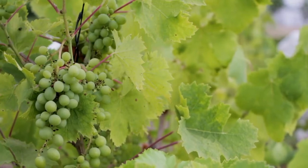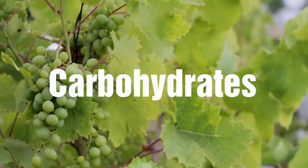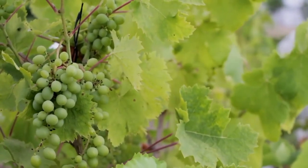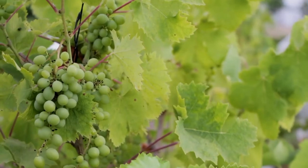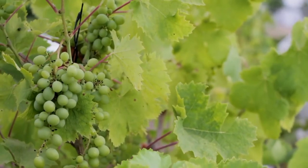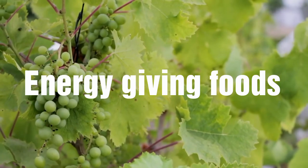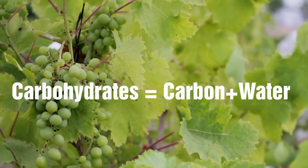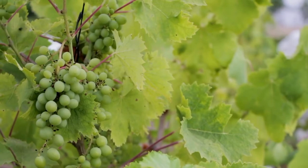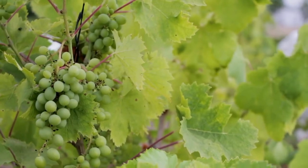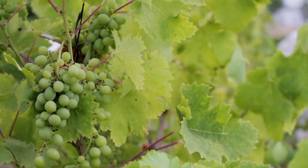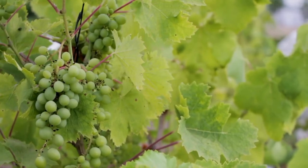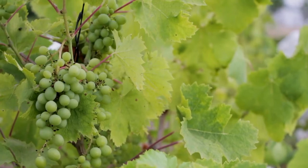Let's check each nutrient in detail. Carbohydrates are the main source of energy, so they are called energy-giving foods. Carbohydrates are made up of carbon and water. When we split the term 'carbohydrate' we get two terms: carbo and hydrate. Hydrate means water in Greek.